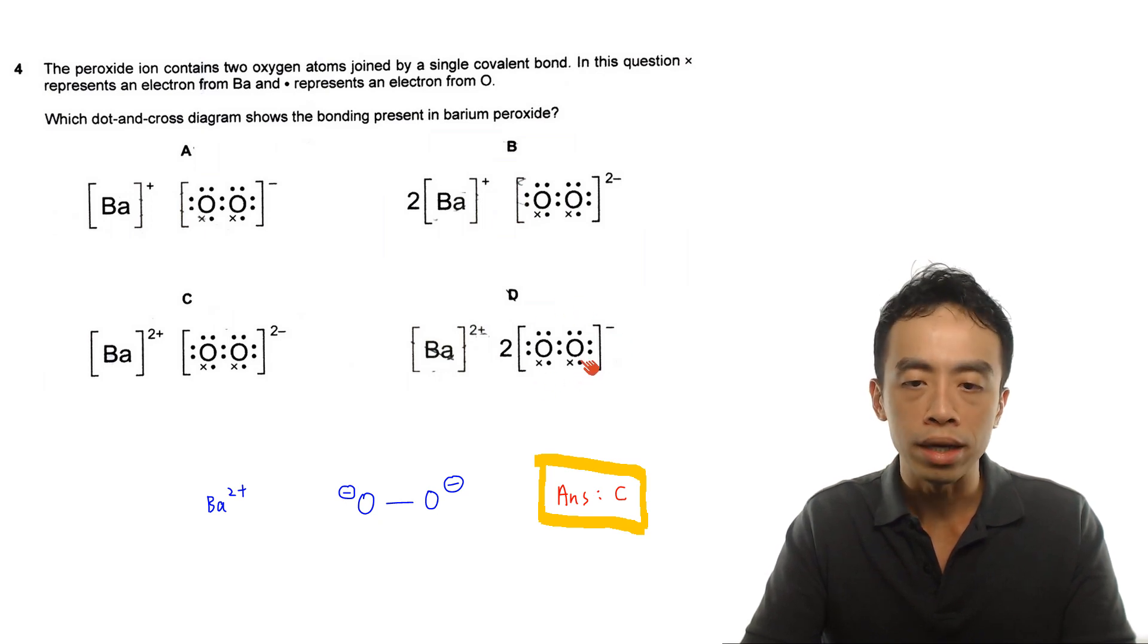But if I compare the dot and cross diagram for peroxides in both instances, actually for both guys, it is exactly the same because the question already mentioned that there's a single covalent bond between two oxygen atoms. So between these two oxygen, there are only two electrons, which will represent a covalent bond. Similarly for this peroxide arrangement here, it is also the same, two electrons between two oxygen. And you notice for both options, each oxygen has an additional electron.